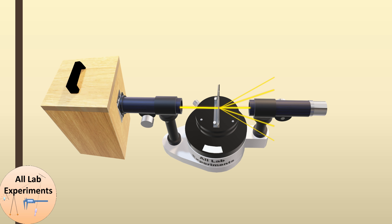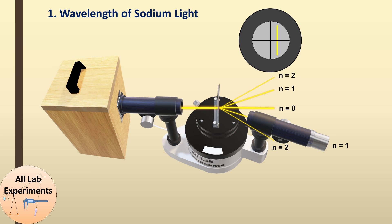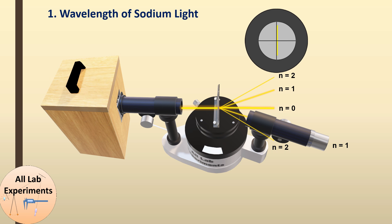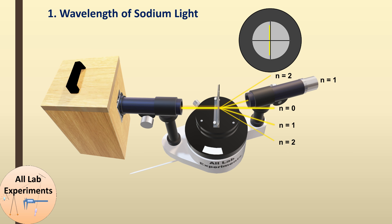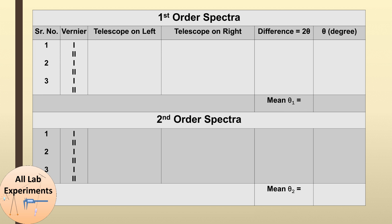As the yellow sodium light falls on the diffraction grating, different beams diffract in different directions. The high-intensity center line is the 0th order maxima. At some deviation we have first order, then second order maxima. We first observe the first order maxima — place the cross wire just above this line and measure its position. Similarly, move towards the right of the central maxima and observe the first order maxima on the right side.